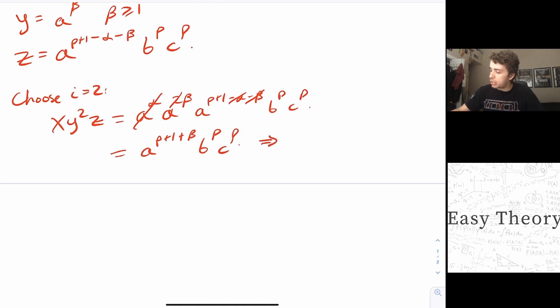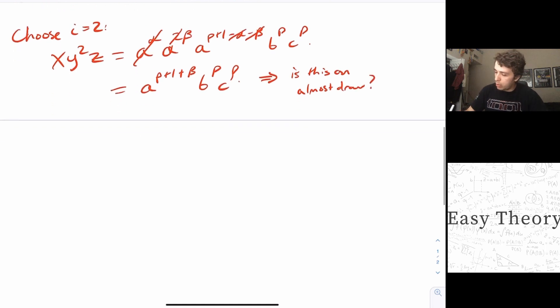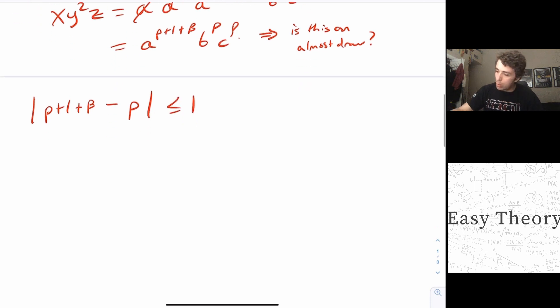So then the question we need to ask ourselves is, is this an almost draw? Well, in order for that to be true, that means that the maximum number of one character minus the minimum number of another character must be at most one. Well, we know that the number of A's is the maximum because it's P plus one plus a positive number. And the minimum could either be the number of B's or the number of C's is the same in this case. So this would imply that the absolute difference between P plus one plus beta minus the number of P's, which is, sorry, number of B's or C's, which is P in this case, has to be at most one. Well, we can easily see that the P's are going to go away. And we know that beta is positive, so we can eliminate the absolute value signs. So that implies that beta plus one is at most one, which is equivalent to saying that beta is at most zero.